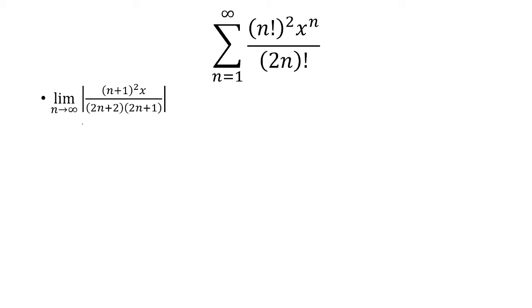Now x can come outside because the limit depends on n, not x, and x comes out as an absolute value. Foiling out the numerator, we get n squared plus 2n plus 1. Foiling out the denominator, we get 4n squared plus 4n plus 1.